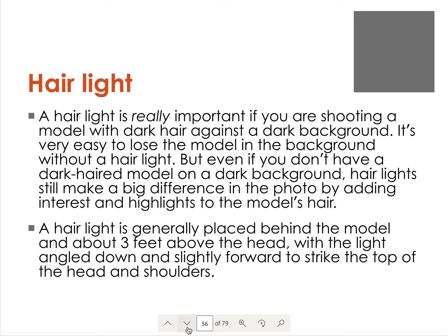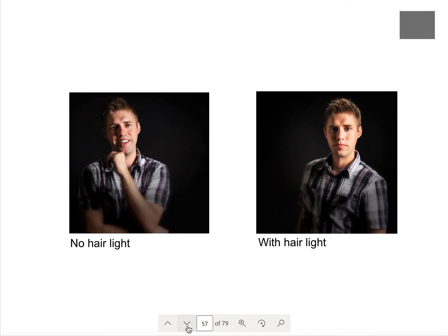Hair light and backlight — you usually use one or the other, but you can use both. Hair light is generally about three feet above the head, directly behind the model, slightly hitting down on the top of the head and shoulders. This backlight shown here is more of a side backlight, meant to highlight and separate the subject from the background.